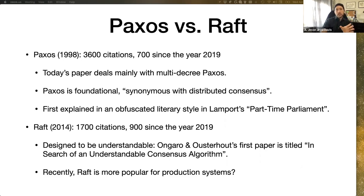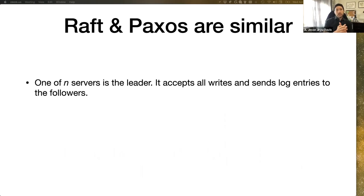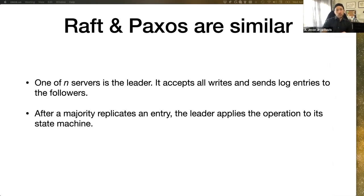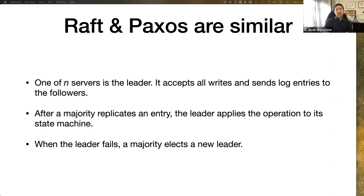The main message of this paper is that Raft and Paxos are very similar. They both have a single leader of a group of N servers. All writes go to the leader. The leader replicates log entries to followers. When it gets majority acknowledgement, it applies the operation to its replicated state machine and acknowledges back to the client. This continues until the leader fails, at which point other members detect the failure from some sort of timeout, and then a new leader is elected by a majority of voters.